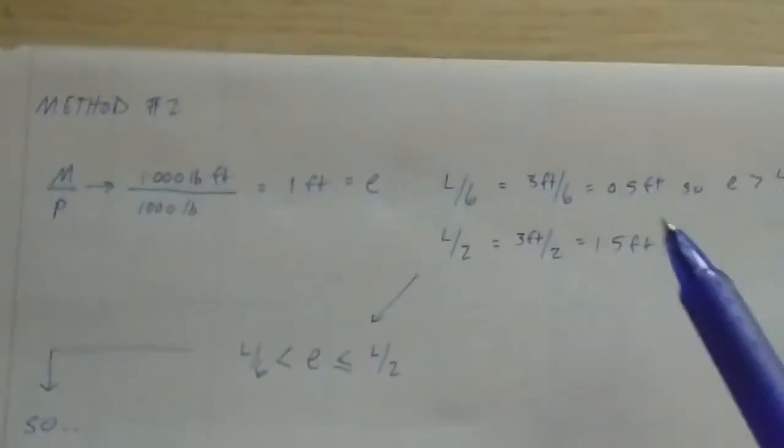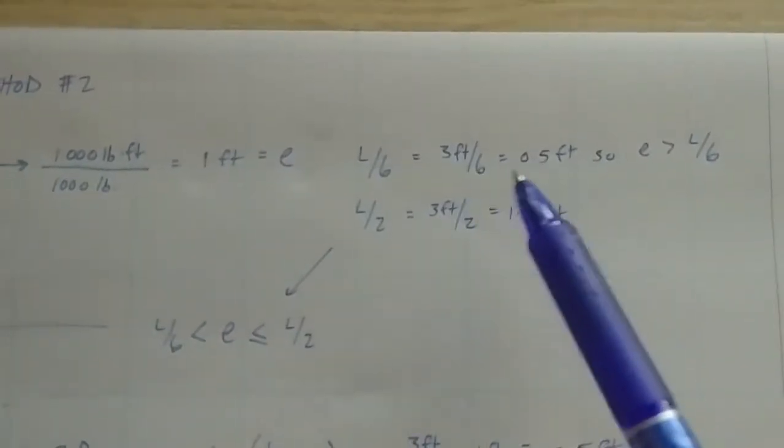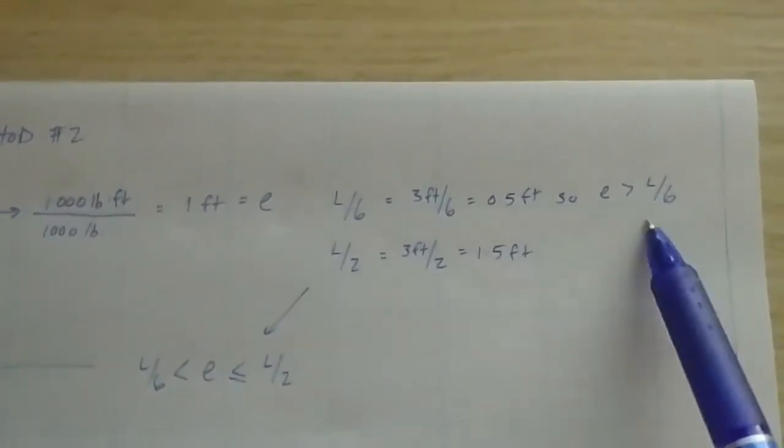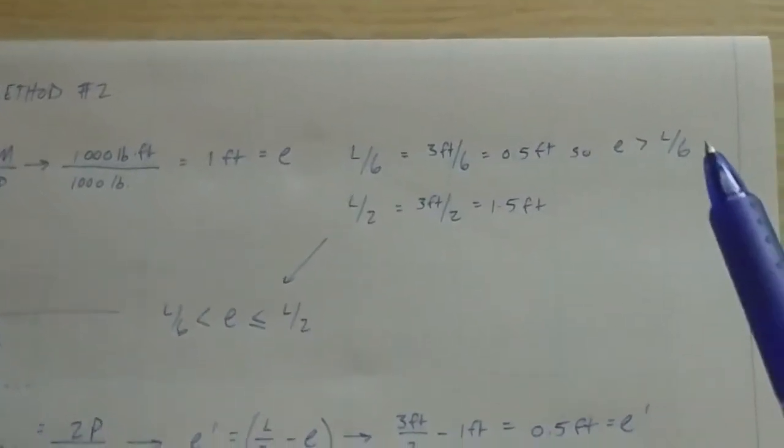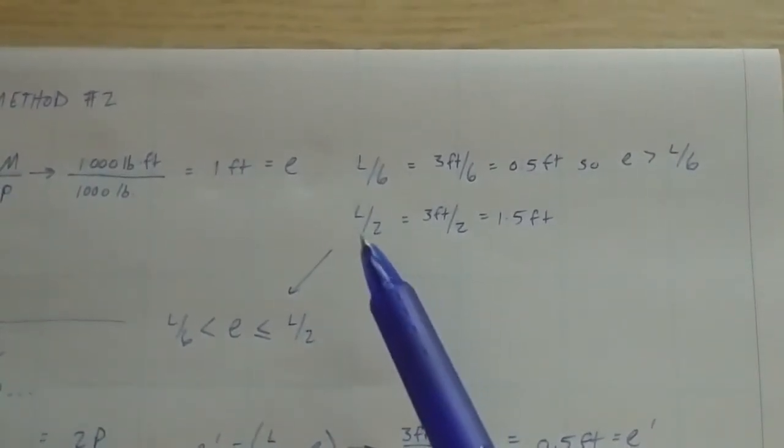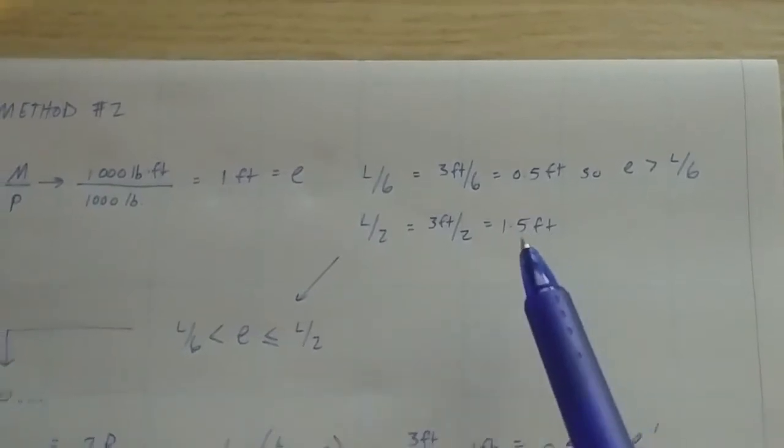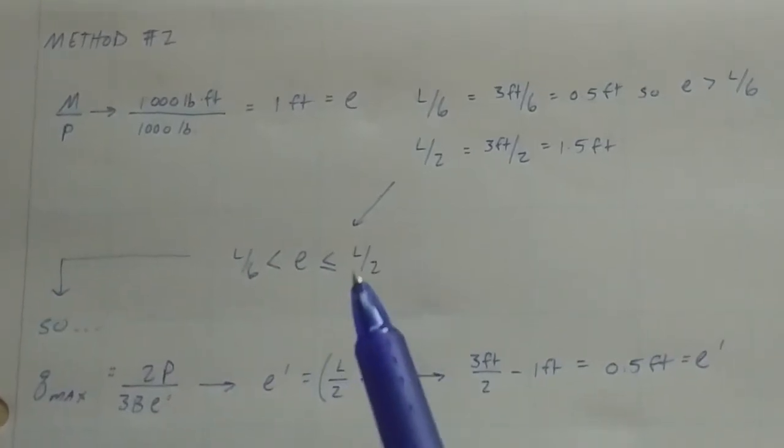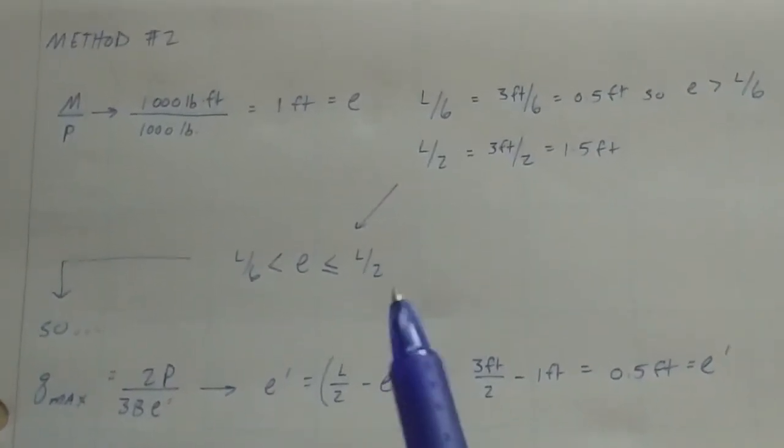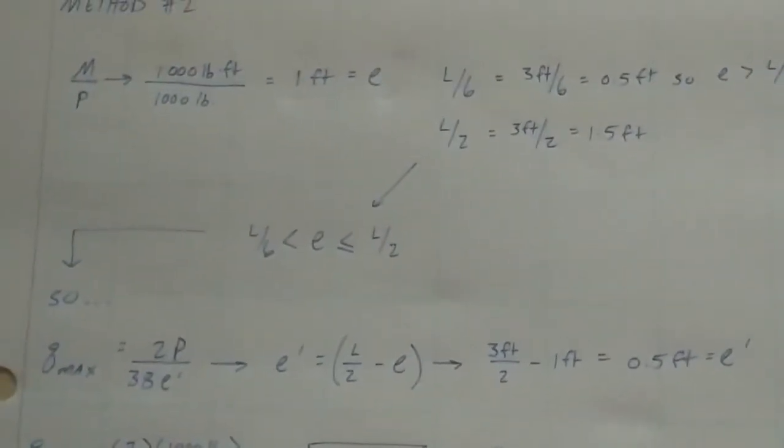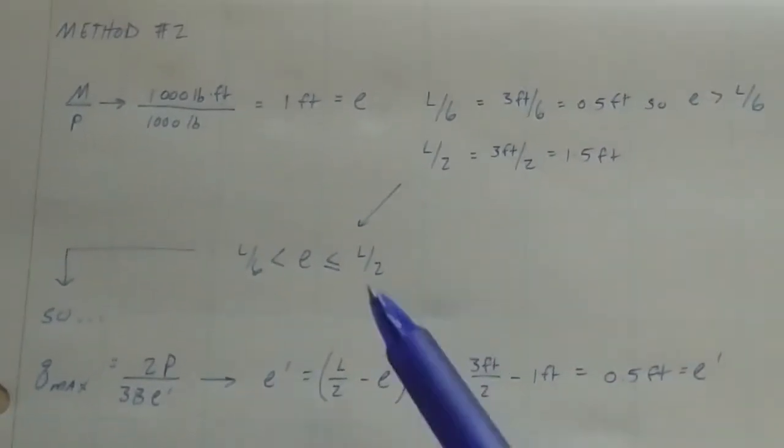You check your eccentricity against L over 6. We knew that from previous. So L over 6 is 3 feet over 6, and if we remember here, L is this dimension. That is L over 6 is 3 over 6, which gets you a half a foot. So E, which is 1 foot, is greater than L over 6, so we're in this new criteria. The other thing you need to check for on the high bound, on high boundary for eccentricity, is L over 2. So 3 over 2 equals 1.5 feet. You want to make sure that your E is less than L over 2. If it's greater than L over 2, you need to resize your footing. Your footing just will not work. There's too much moment, there's too much eccentricity, and your footing is just improperly sized. So that's your high bound.